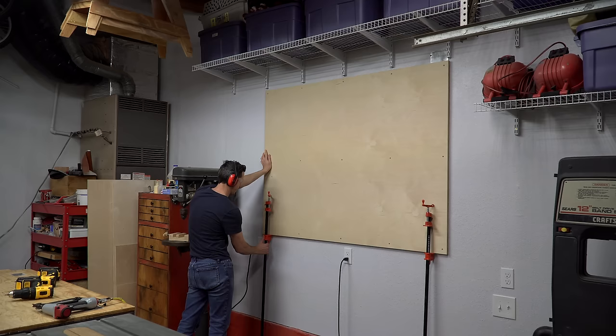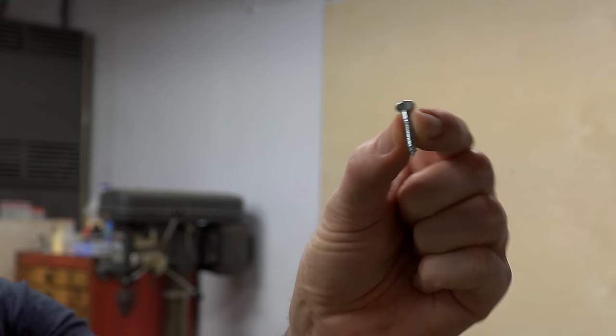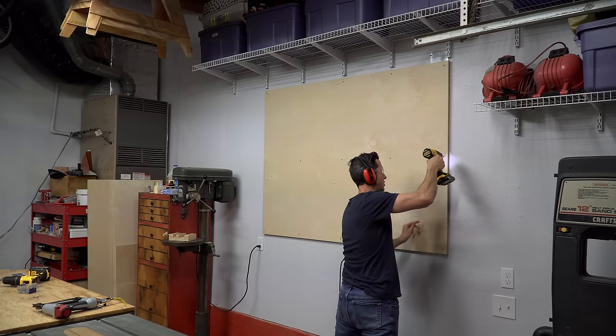I used short screws anywhere there was a high spot to make sure it couldn't reach the stud and pull the sheet too close to the wall. Not all of the screws need to make it to the studs, they just need to make it to the underlying sheet of plywood because it has plenty of holding power with all the screws I used on it.